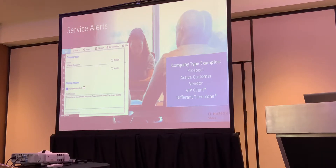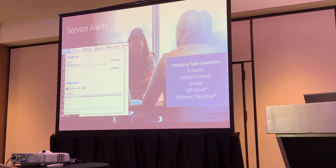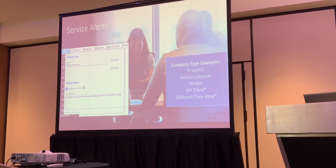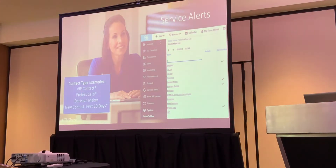Under the setup tables, when you go into the company type or the contact type, you can see the company type a little further down on that screen. Just do the checkbox to enable a service alert and then the text box is whatever you want it to say. You can only have service alerts on five company types and five client types, but you can apply multiple company and contact types per record.